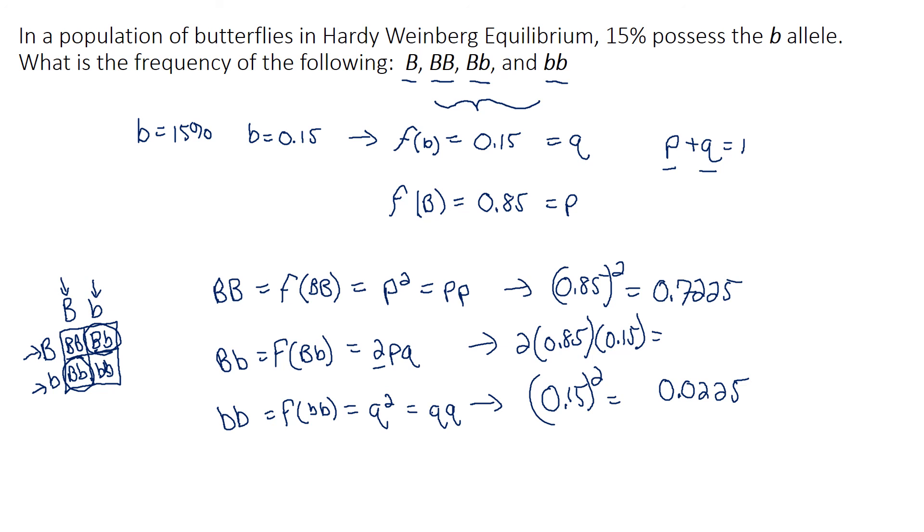So then what we do is 2 times 0.85 times 0.15 equals, and then the sum of these should equal 1 if we calculate it out. And what I calculated was 0.255. So the sum of these should equal 1, and I calculated that out as well, so you can check yourself that way. So what this is saying is that in this population of butterflies, 72% of the butterflies are homozygous dominant.